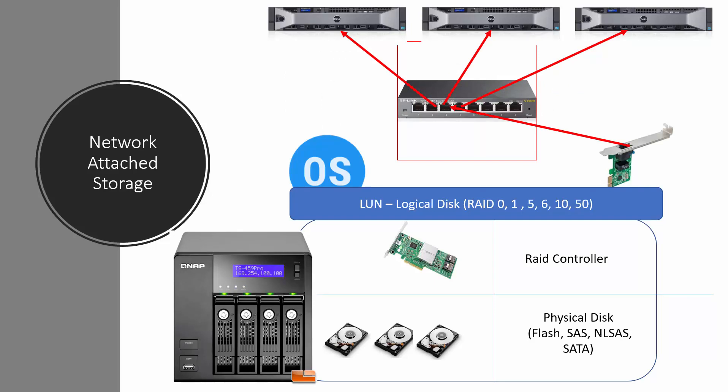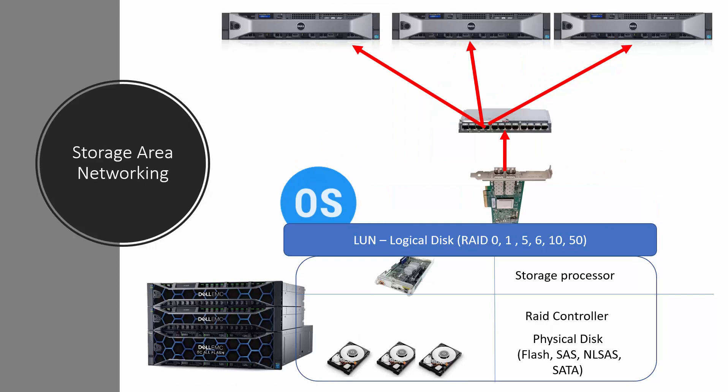Next is network attached storage. NAS consists of a disk, RAID controller, and a small operating system — either Linux, Windows, or a vendor-proprietary OS — plus an Ethernet interface. Using this Ethernet interface, you connect the storage device to a network and share it to multiple hosts to create logical disks. The advantage is that it's cheap, available in 1 Gbps and 10 Gbps networking. NAS is mostly used for file sharing purposes.